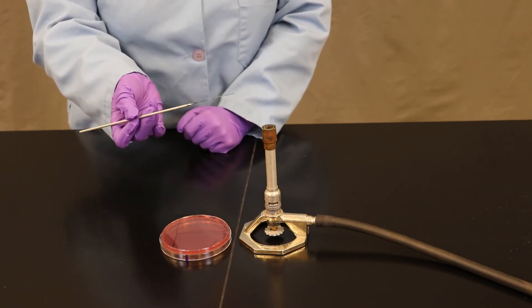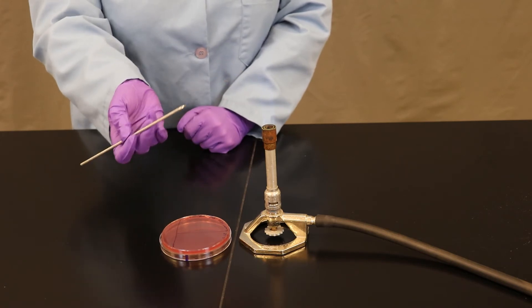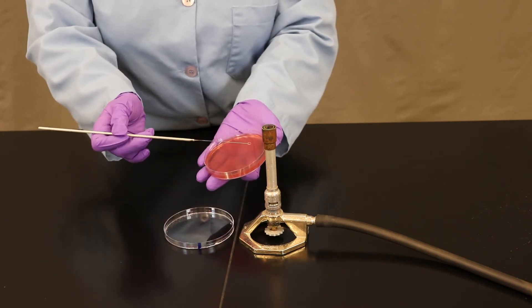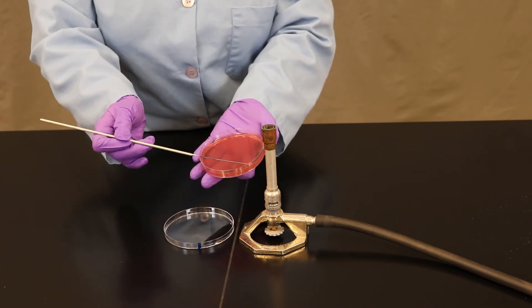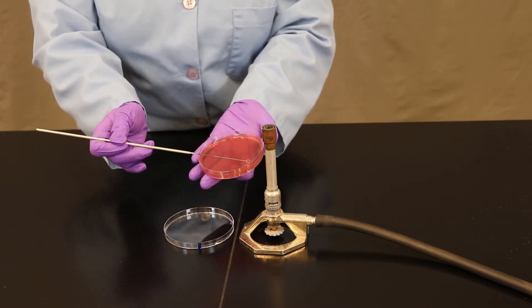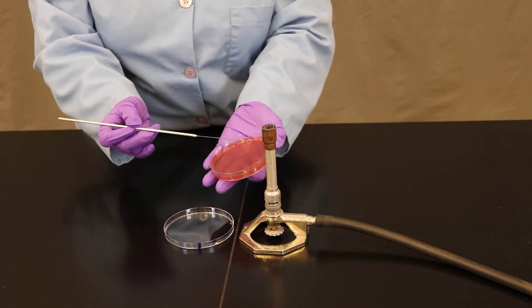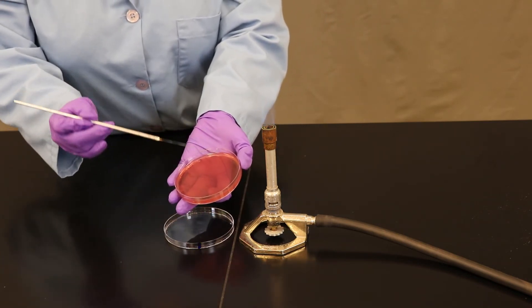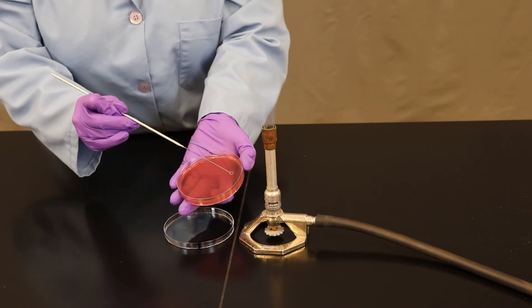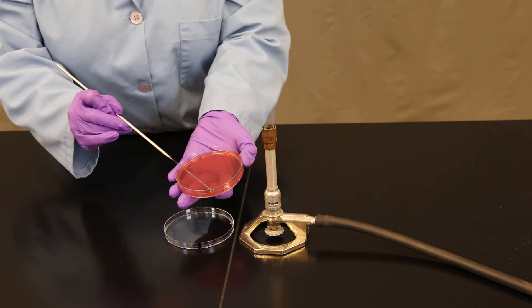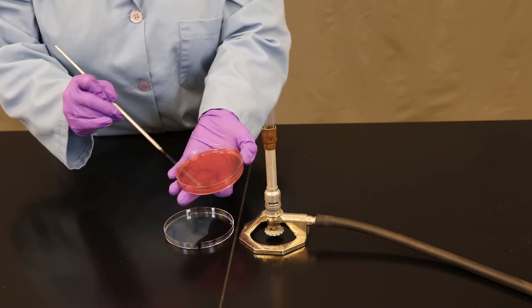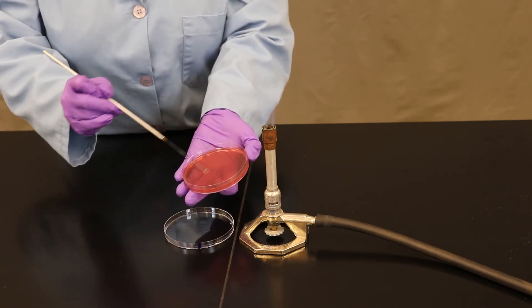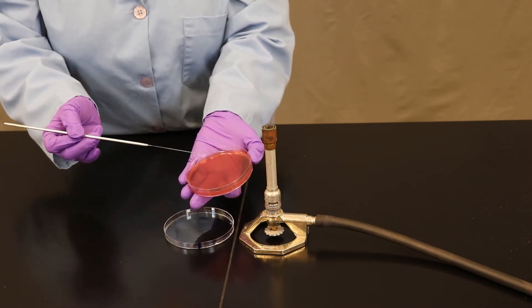Allow it to cool. I typically like to hold the loop close to the Bunsen burner. Many microbiologists will touch the loop on a clean portion of the petri plate by tapping it down, making sure they don't hear a sizzle, making sure they don't melt the agar. Once you're sure that it's cool, you're now going to physically touch down into the first zone where you place the bacteria, and you're going to begin streaking back and forth. You have a lot of surface area to work with, so the more you streak back and forth, the better. We'll show you what the final result looks like afterwards.